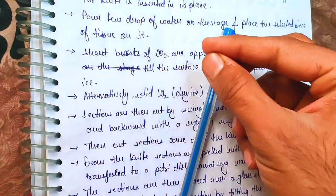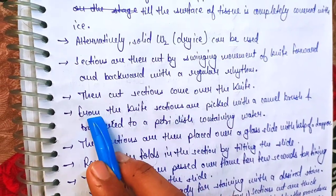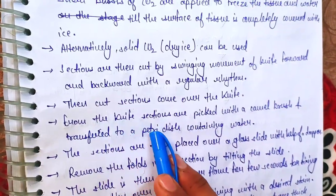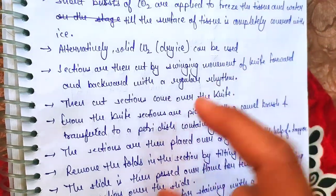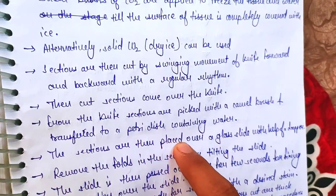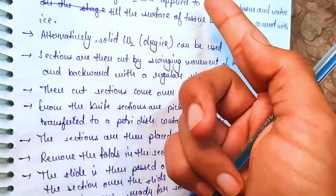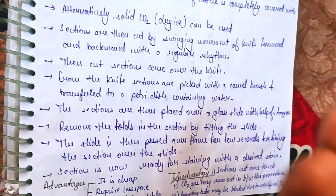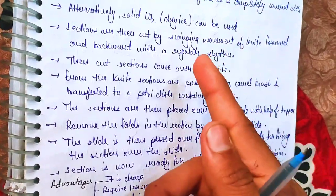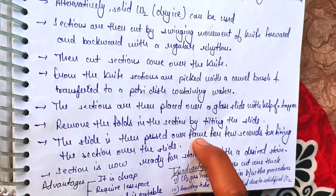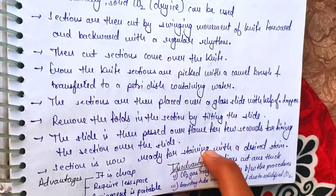The sections are picked from the knife with a camel brush and transferred to a Petri dish containing water. Using a dropper, the sections are then placed over a glass slide. Remove the folds in the section by tilting the slide. The slide is then passed over a flame for a few seconds to fix the section.